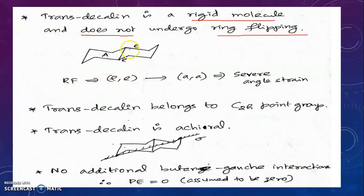Ring flipping would convert these equatorial-equatorial bonds into axial-axial bonds, which introduces severe angle strain in the molecule. To avoid this, trans-decalin does not undergo ring flipping.